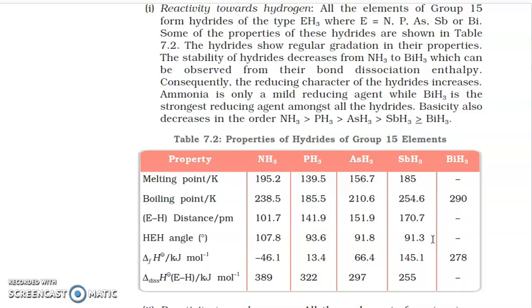Why does bond angle decrease even though size is increasing? Bond angle depends on the electron density on the central atom. Greater the electron density on the central atom, more it repels the bond pairs. Nitrogen has high electron density, so it repels the H bond pairs, pushing them apart and increasing the bond angle. As electron density decreases going down, repulsion decreases and bond angle decreases.